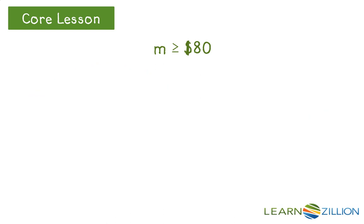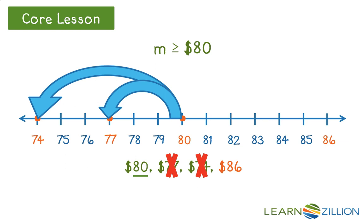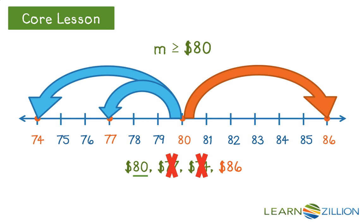Now let's look at my last possible solution of $86. As I place the dot on the number line, I notice it is to the right on my number line. Therefore, it has a greater value than $80, so $86 is greater than or equal to $80 — this is a possible solution.